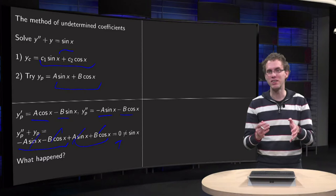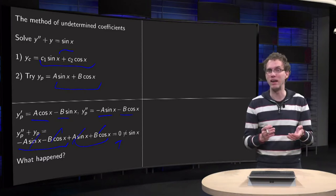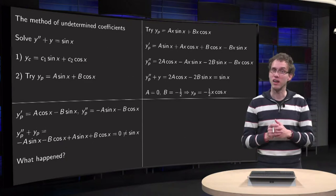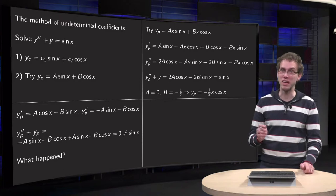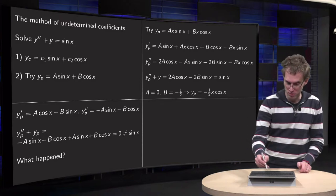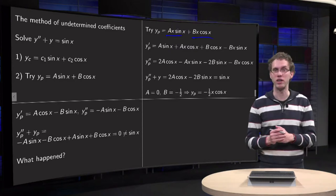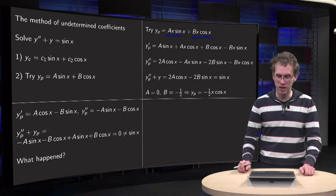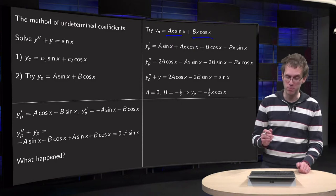So we are now convinced that this particular solution won't work, and that we could have known that beforehand. What does work? When you find something like this, you need to add an additional factor of x. We try the particular solution A·x·sin(x) + B·x·cos(x), similar to what happened in our r=0 case previously.